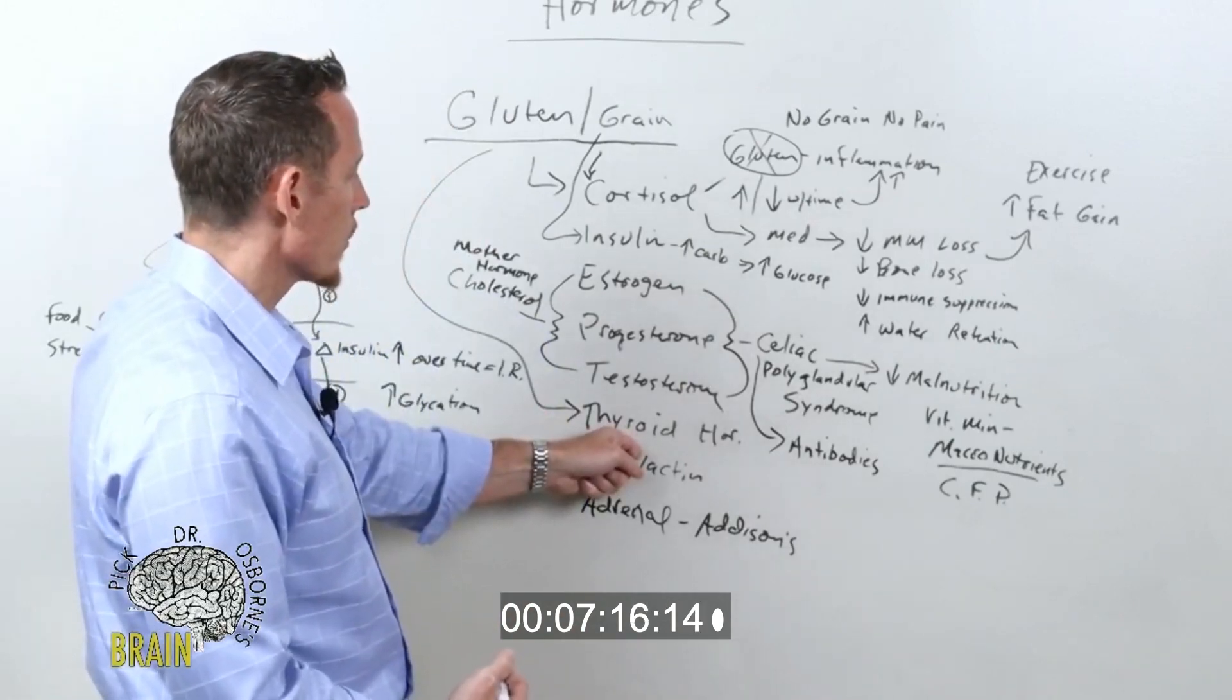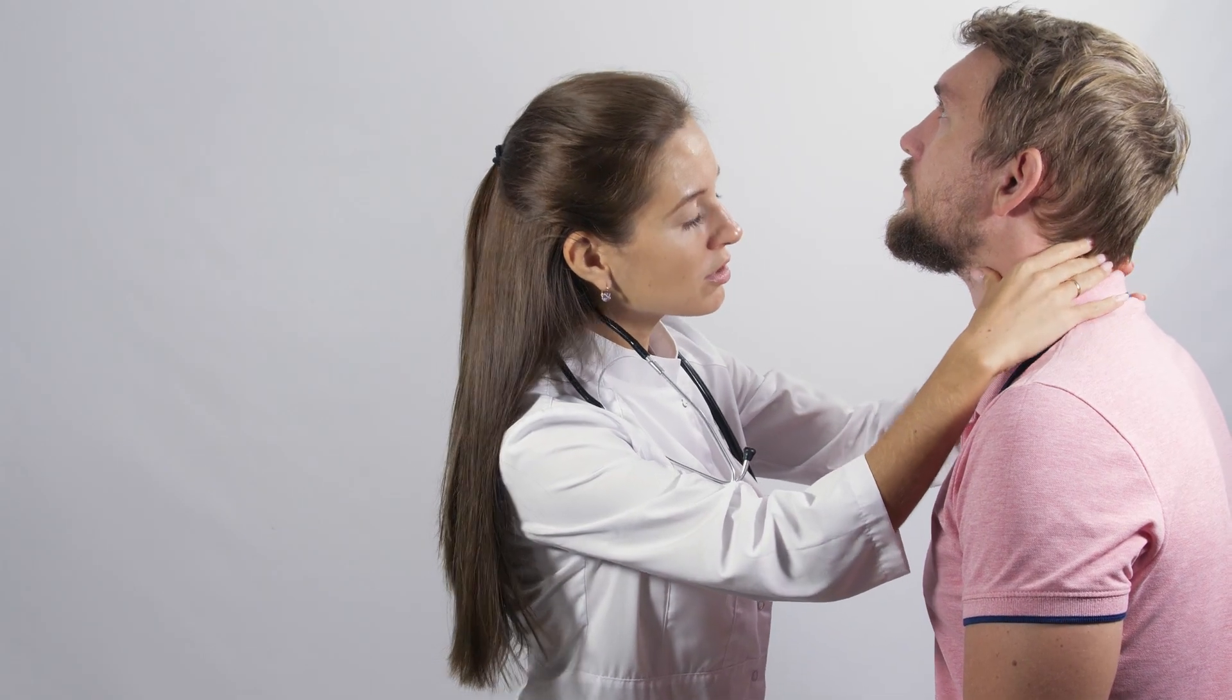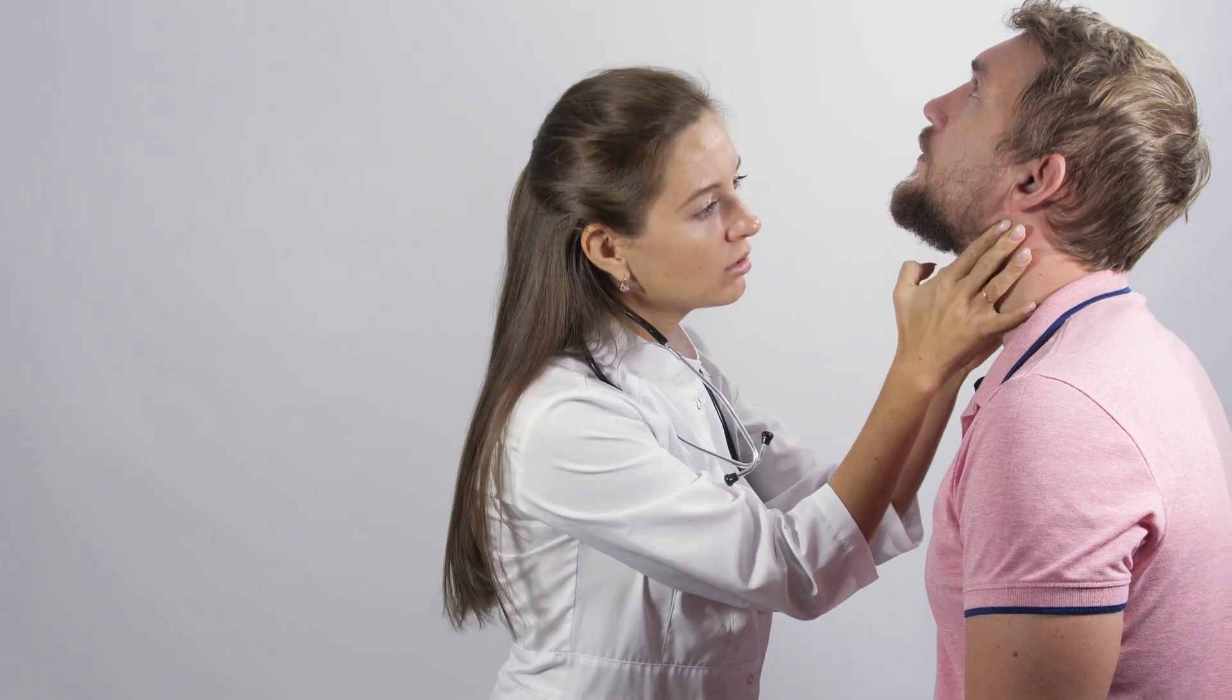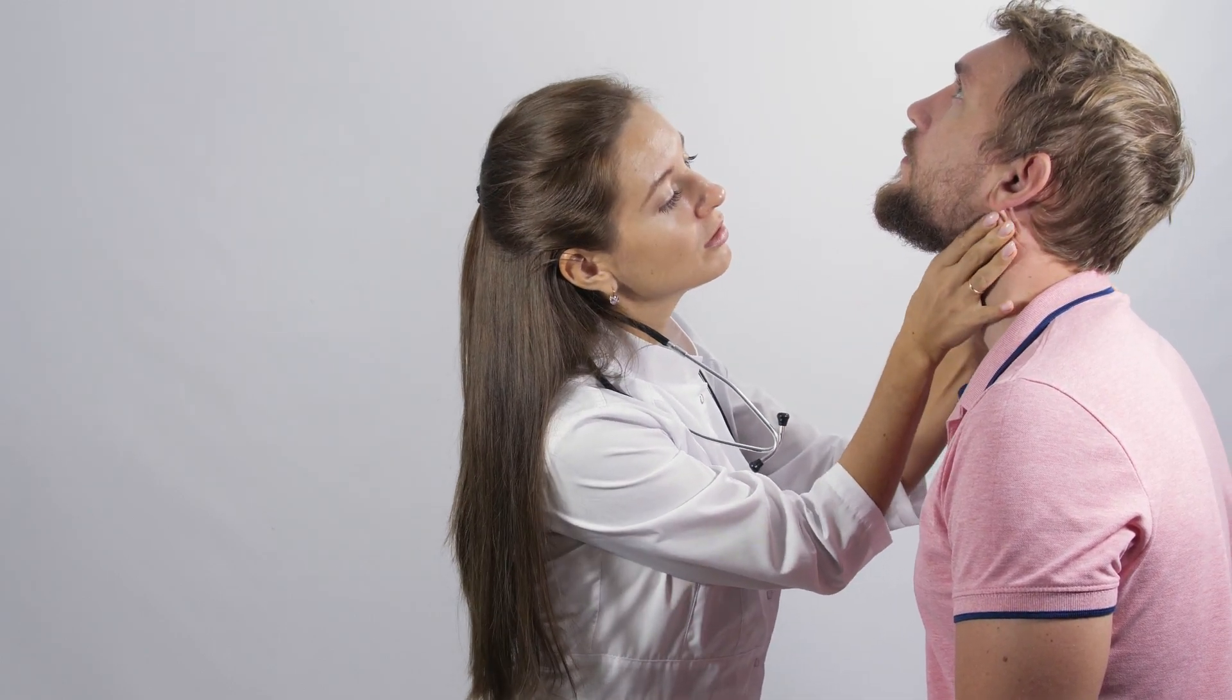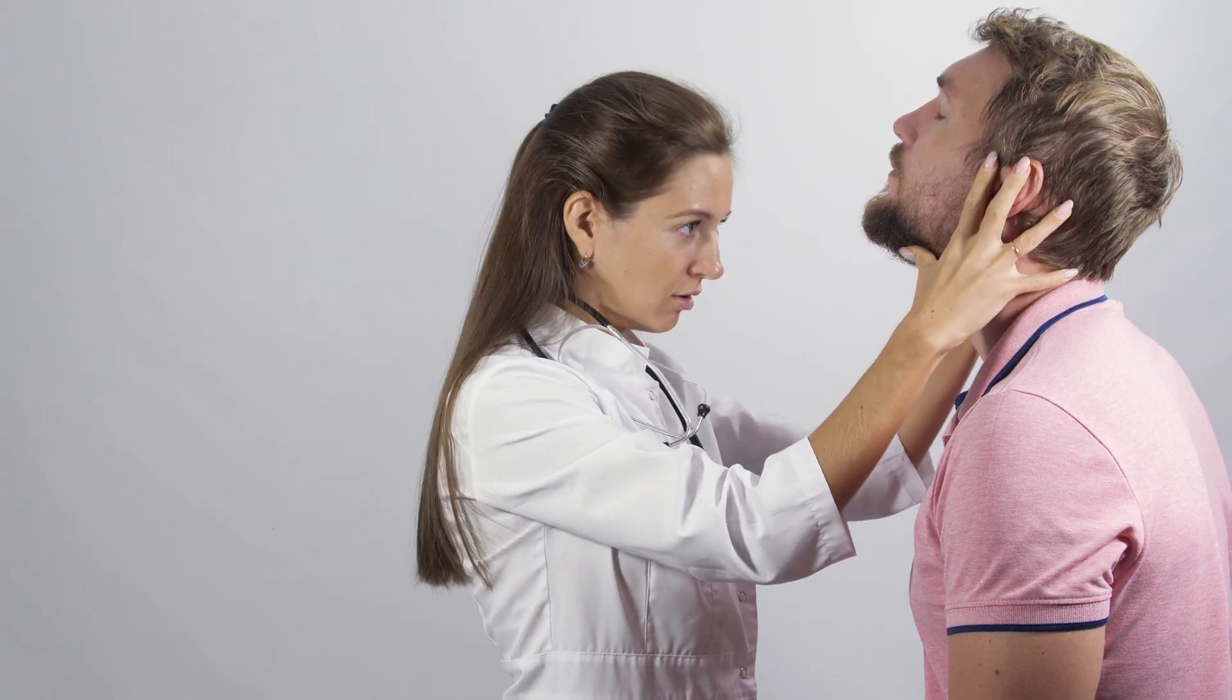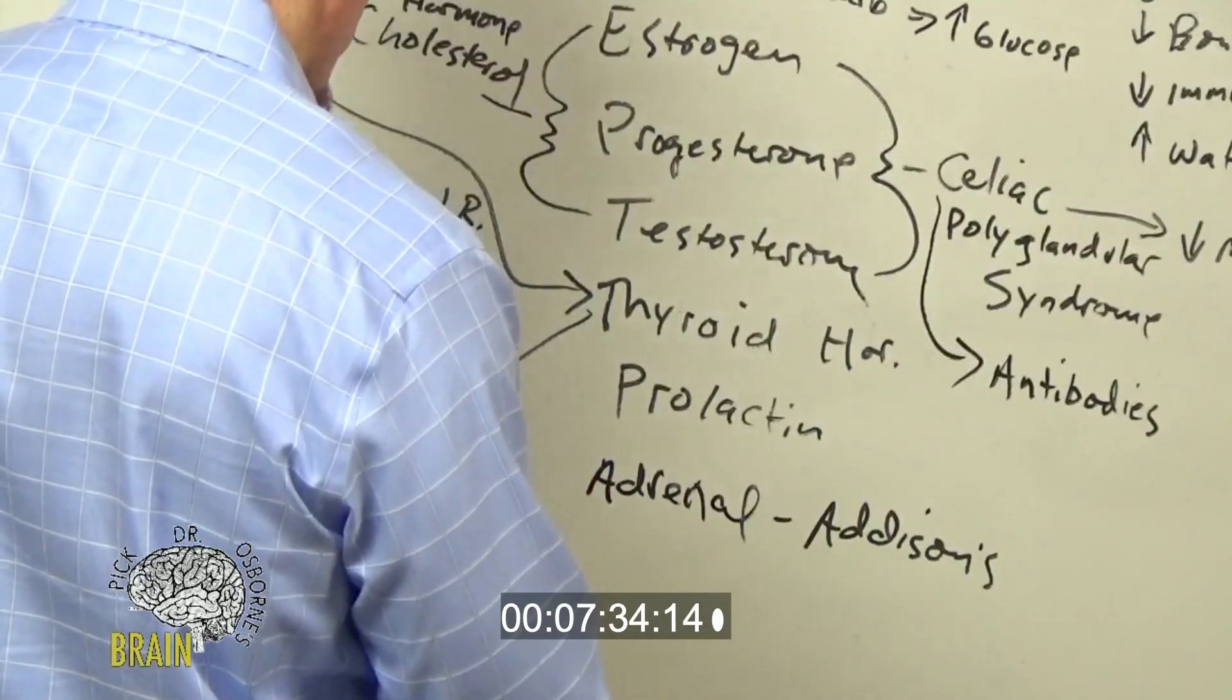So gluten, we know, can induce a hypothyroid state through autoimmune processes. Now on the flip side to that, you got thyroid level being low, we also see gluten can cause hyperthyroidism or Graves' disease. So again, we've got Graves' and Hashimoto's